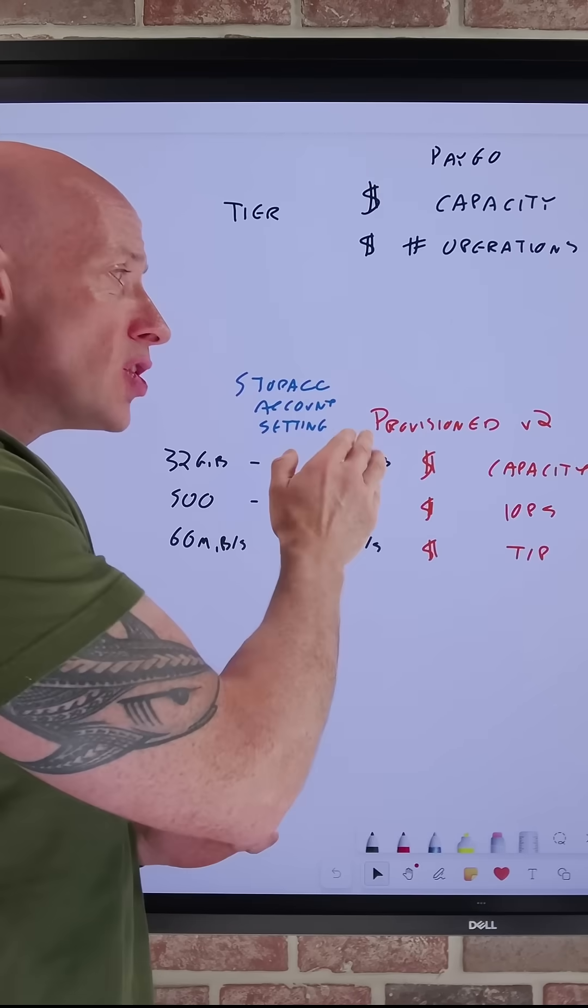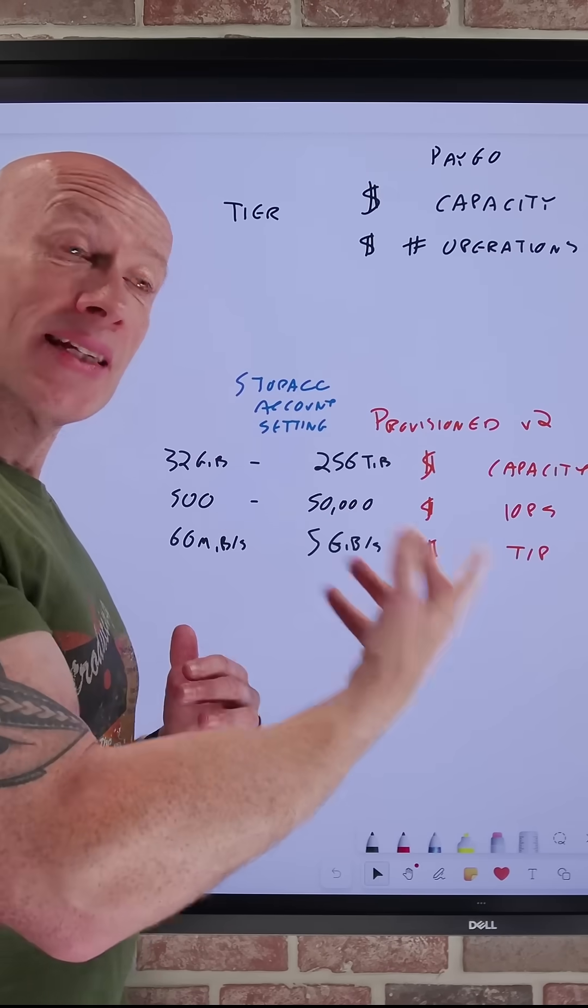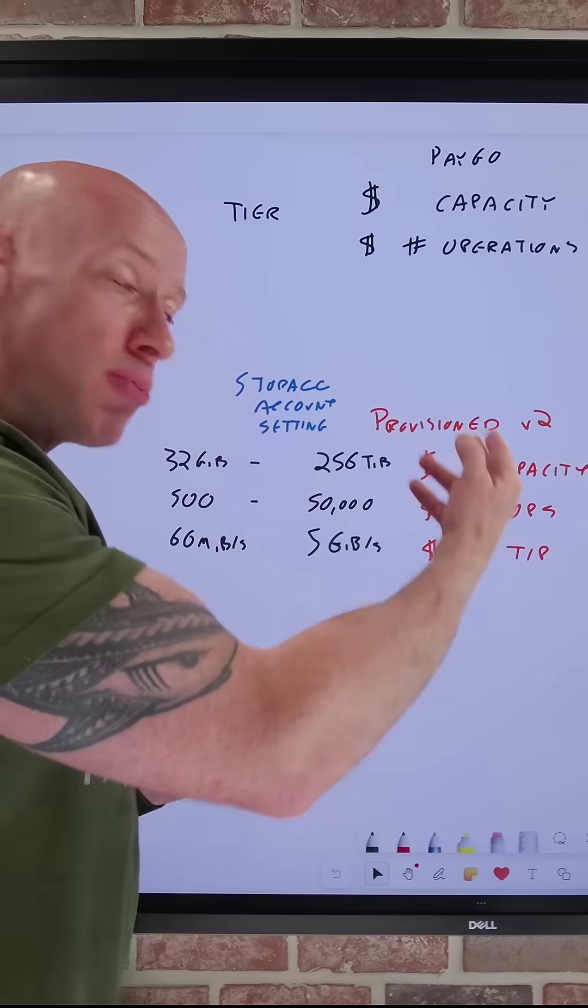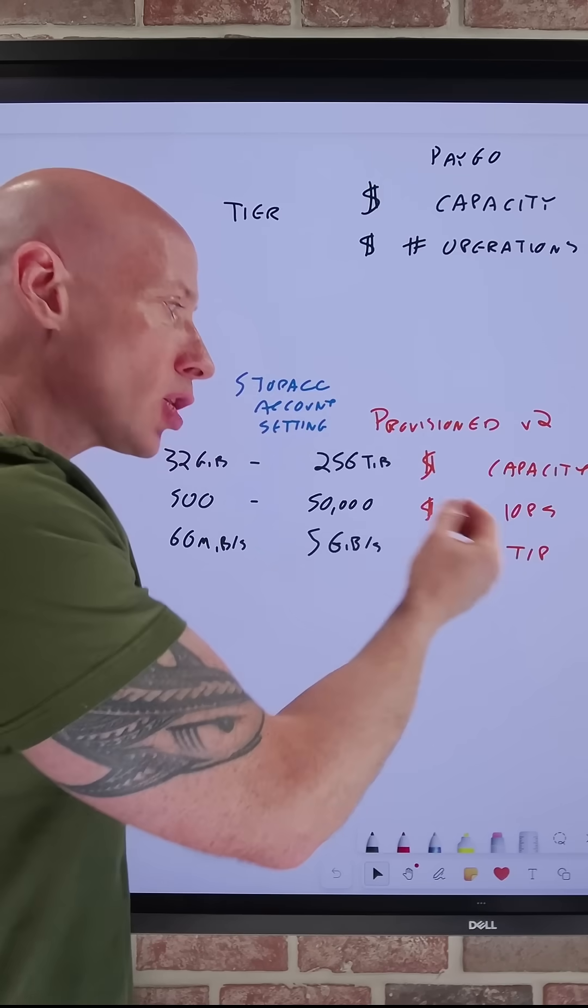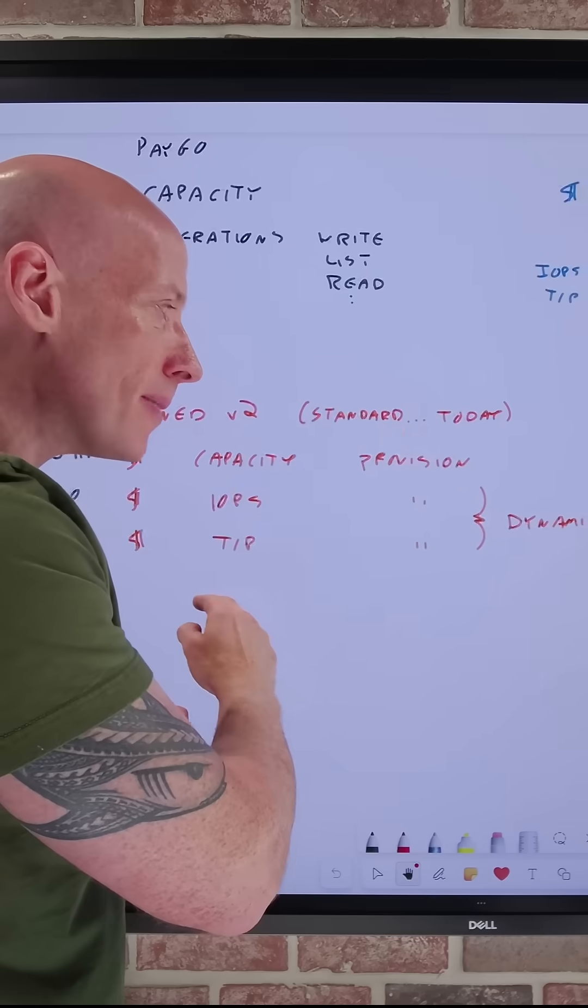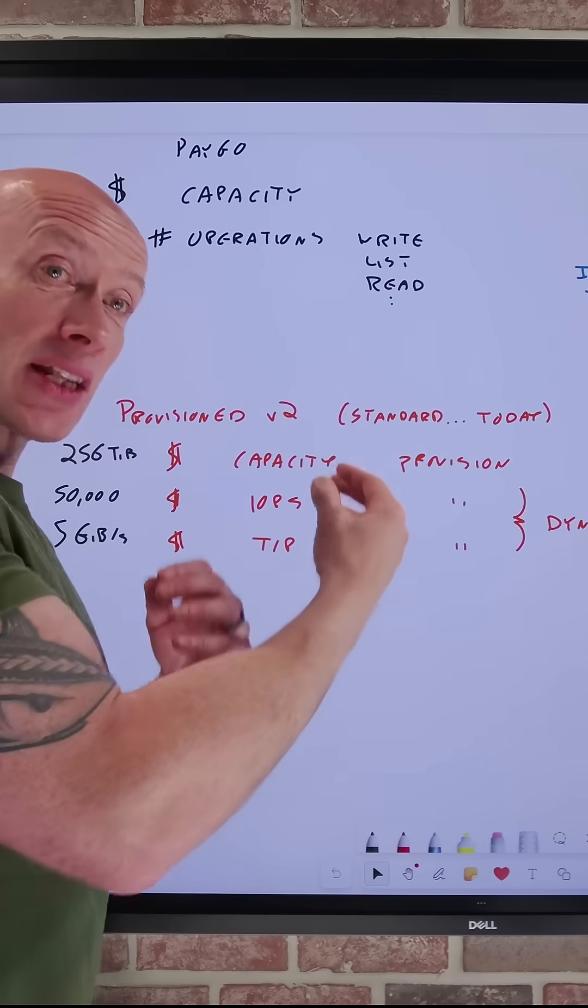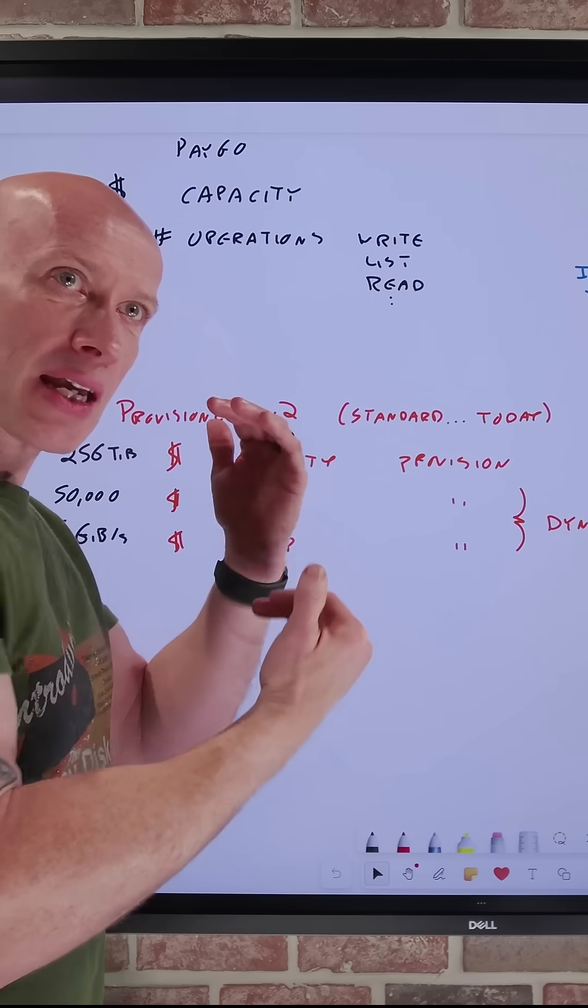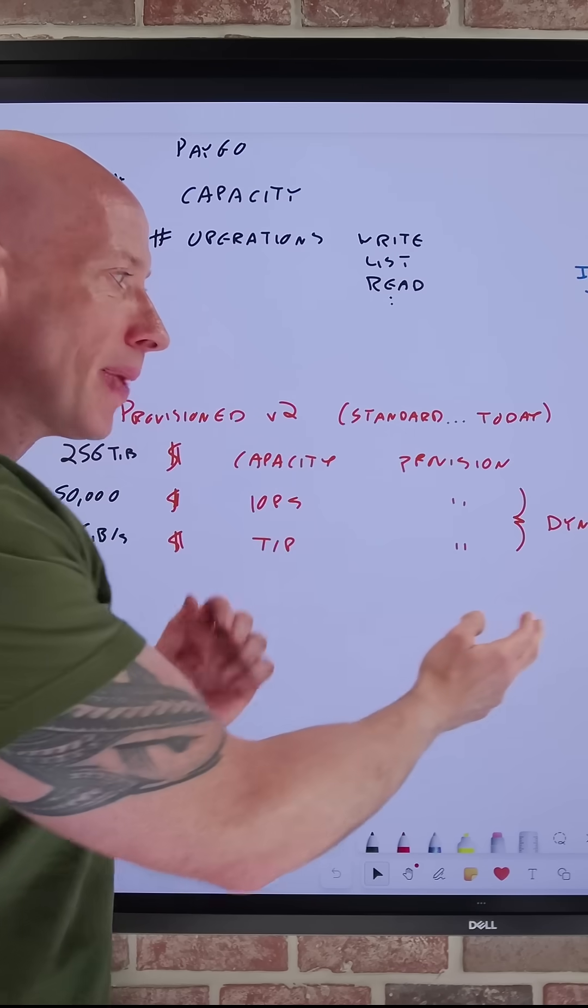With the new Provision V2, which is standard only today, we now pay for the capacity provisioned, the IOPS provisioned, and the throughput provisioned individually, and we can dynamically change that IOPS and throughput when we want, so we have complete control of the performance and the capacity.